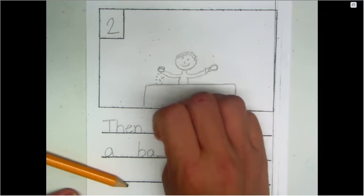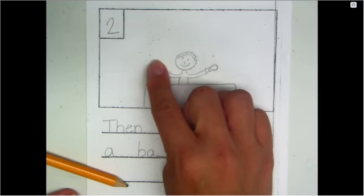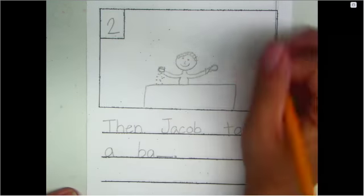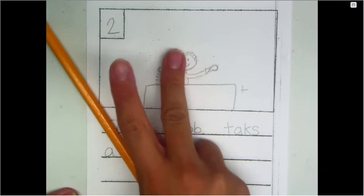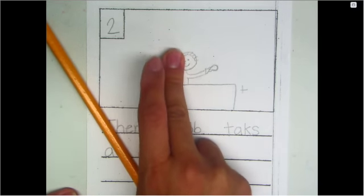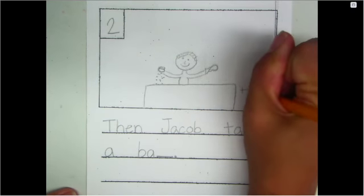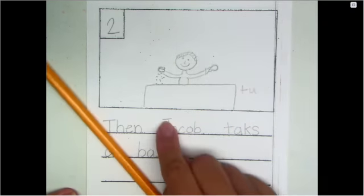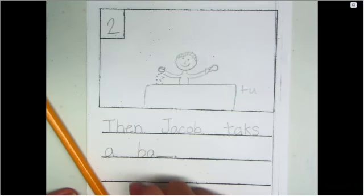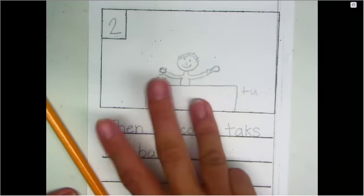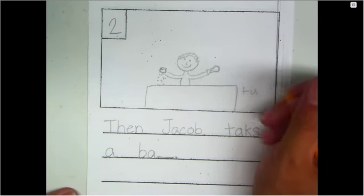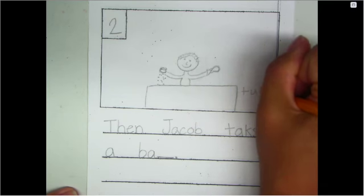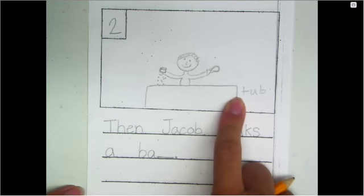First sound, t, t, t. What letter makes t? Yeah, t. Second sound, t, uh. What letter makes uh, like umbrella? Yeah, u. Last sound, b. So we have t, uh, b. The last sound, b, like bear or bat and ball. B. So I labeled my tub. That's important.